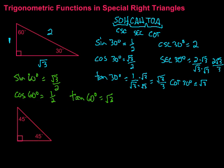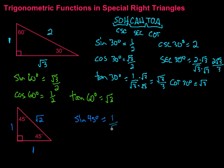Now let's look at the 45-degree triangle. In the 45-45-90 triangle, the two legs are each length 1 and the hypotenuse is the square root of 2 — we can verify this using the Pythagorean theorem. The sine of 45 degrees is 1 over the square root of 2, and after rationalizing the denominator by multiplying by square root of 2, we get the square root of 2 over 2.